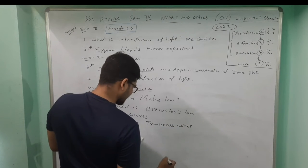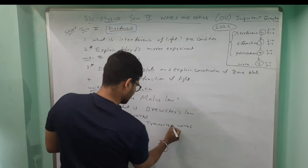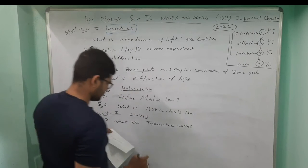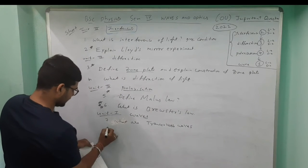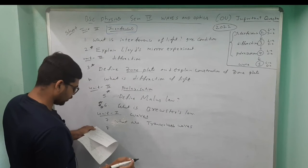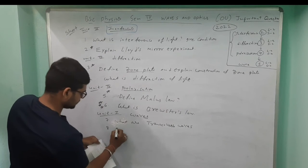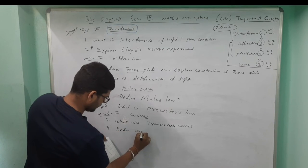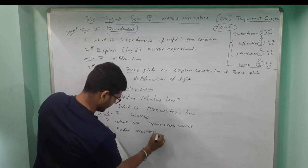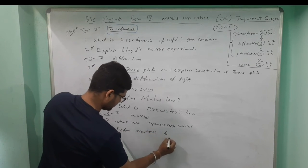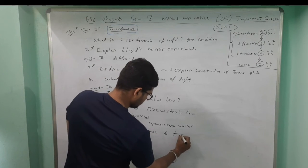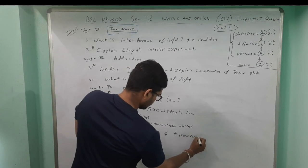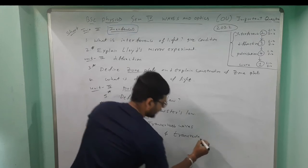Short answer questions for unit one — Waves. Seventh question: what are transverse waves? Eighth question: define overtones and transverse impedance.